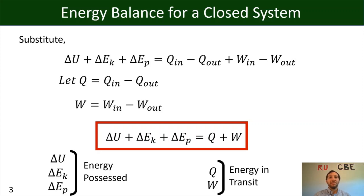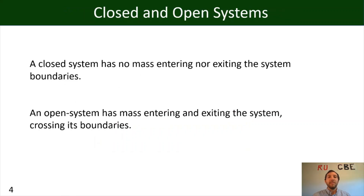This is the energy balance for a closed system. A closed system is a system that has no mass entering or exiting the system boundaries — nothing coming in nor going out mass-wise. We can have heat or work entering or exiting, but nothing with mass. An open system is therefore a system where mass is entering and exiting, crossing our system boundaries.